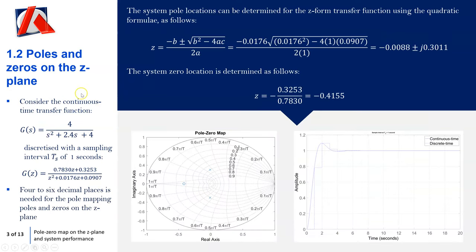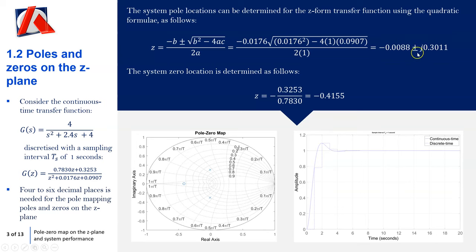In terms of determining the poles and zeros on the z-plane: here we have the continuous transfer function discretized with a sampling interval of 1 second. You can see the continuous time system response subject to a unit step input, and the discrete model with sampling interval of 1. Using the quadratic formula — with coefficients A, B, and C from the denominator — you'll end up with a complex number denoted j, giving a pair of complex conjugate poles. Looking at the z-plane, you can see the pole at minus 0.0088 plus 0.3011j.